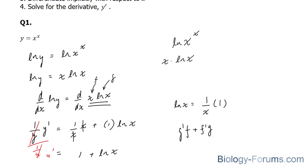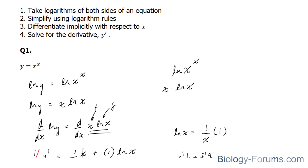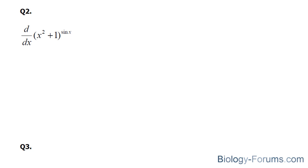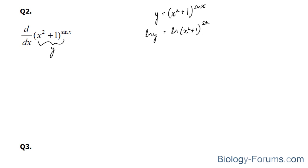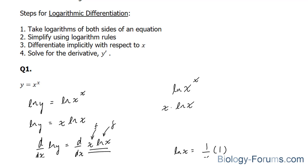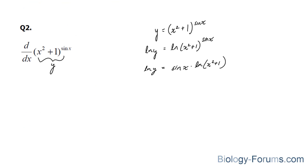Let's use the same technique, these steps outlined right here, to answer question number 2. We'll start off by setting this equal to y. So y is equal to (x squared plus 1) to the power of sine x. The next step will be to take ln of both sides. ln of y is equal to ln of (x squared plus 1) to the power of sine x. Using the log rules, this comes down: sine x times ln of (x squared plus 1). The next thing I'll do is implicitly differentiate. On the left side, we end up with 1 over y times y prime.